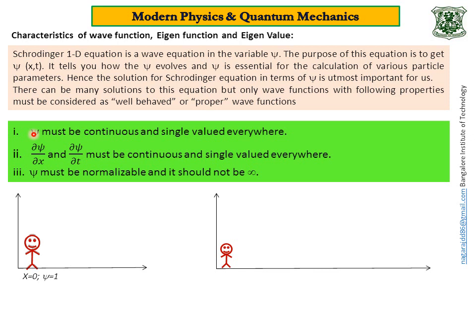ψ must be continuous and single-valued everywhere. Probability of finding the particle must be continuous and it must have only one value at a time at a place. So it must be single-valued everywhere. Look at this illustration. I have taken this person as a particle. Right now, he is here at x = 0, and right now probability of finding him is 1. So this is a single value. If he moves like this, then probability becomes 0 over here. But probability becomes 100% again over here. So that is the meaning of single value.